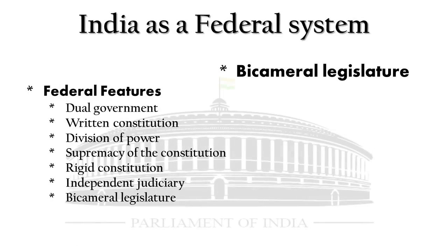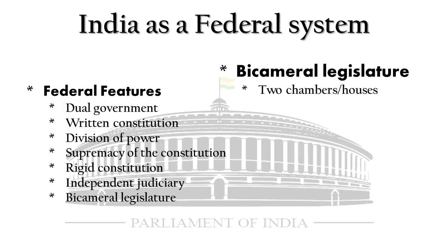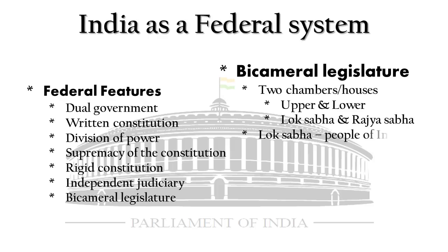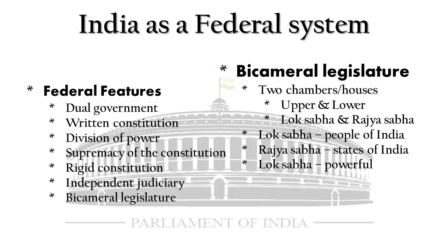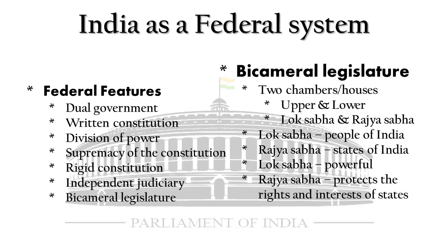Coming to the bicameral legislature: bicameral means two chambers or houses — an upper house and a lower house. In India, the lower house is called Lok Sabha and the upper house is called Rajya Sabha. Lok Sabha represents the people of India, while Rajya Sabha represents the states of India. Lok Sabha is more powerful than Rajya Sabha, but Rajya Sabha is still necessary because it protects the rights and interests of the states when the center unnecessarily involves itself in state matters.